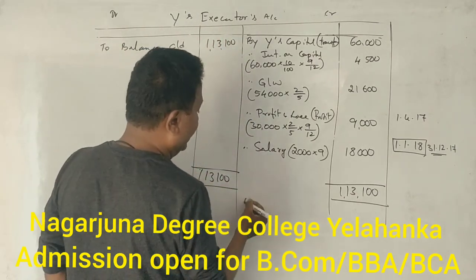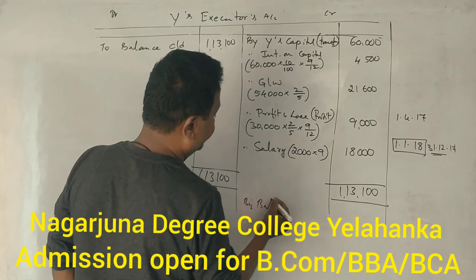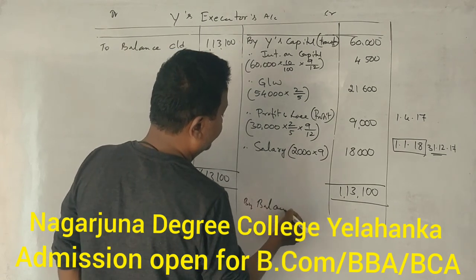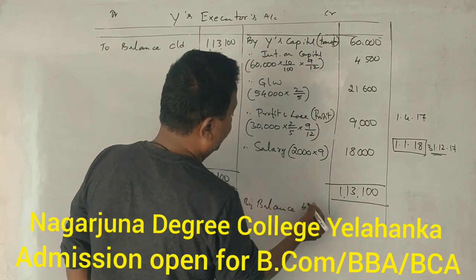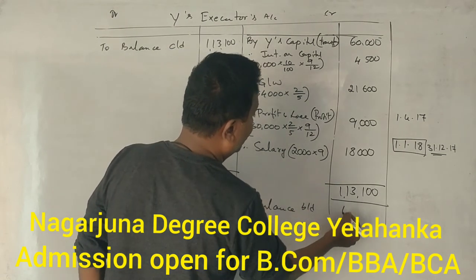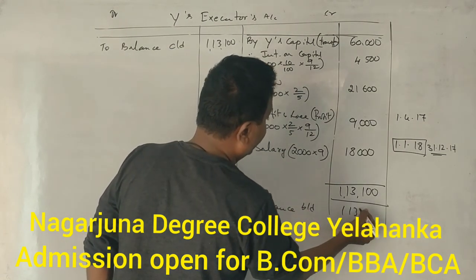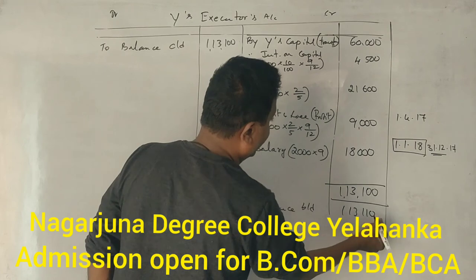By balance, the total amount payable to the executors of Y is brought up to 1,13,100.